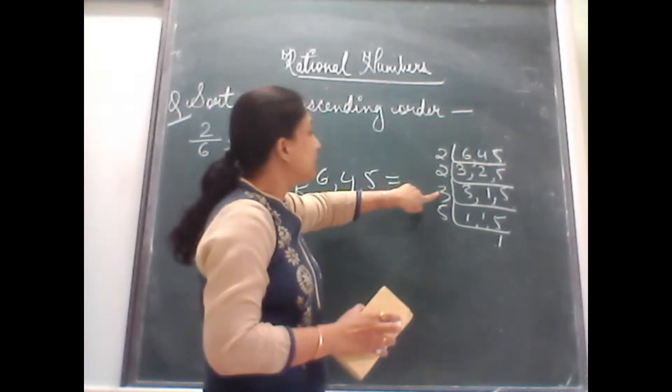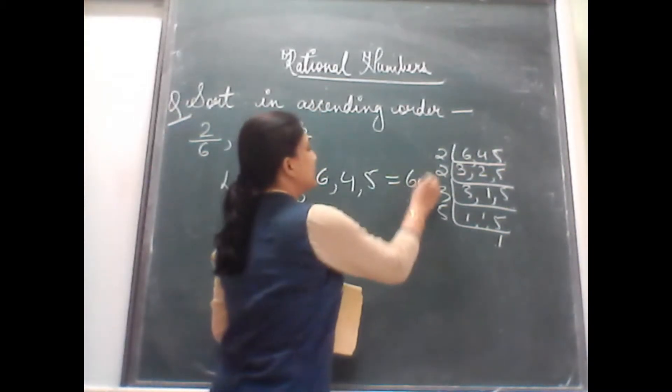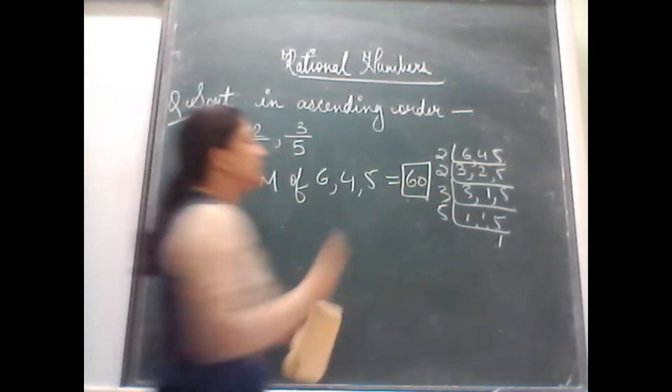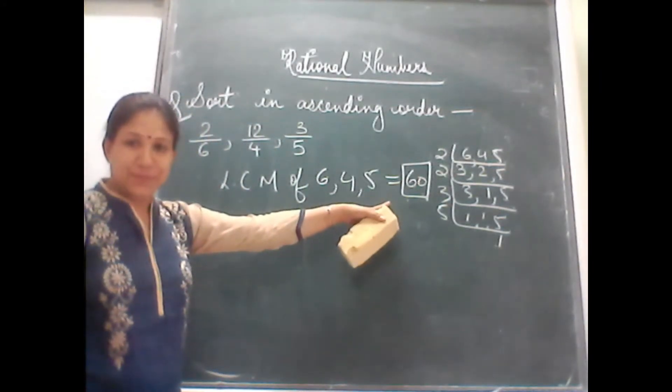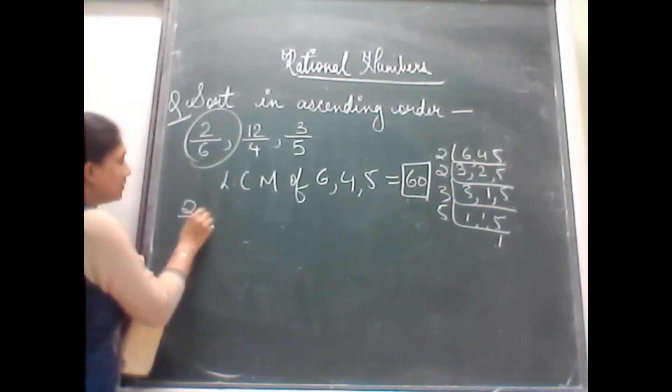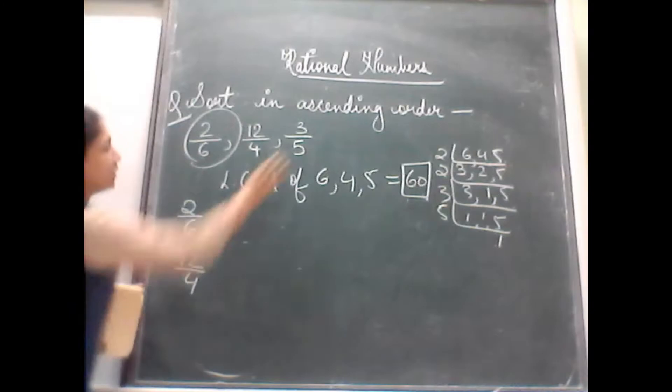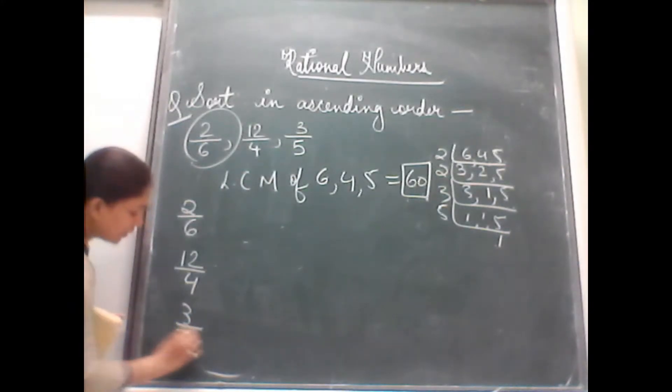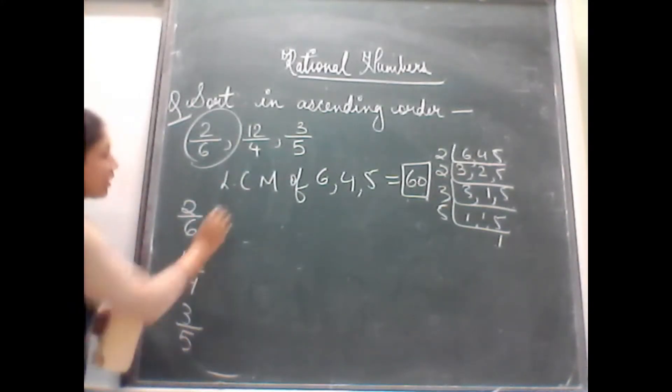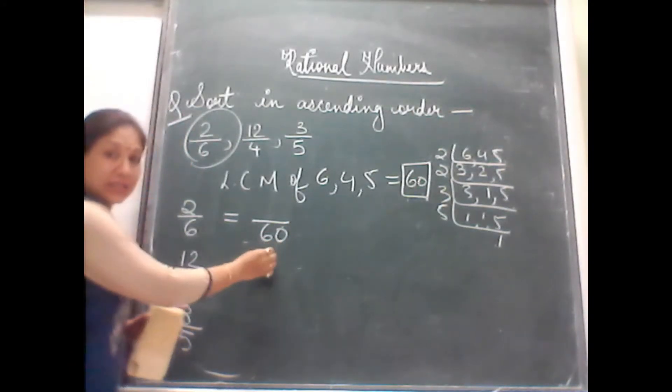30, 2 is 60. So we get the LCM as 60. The next step will be, you take down these numbers, write below each other, one below the other. You copy the numbers which were given and you compare it with the calculated LCM.